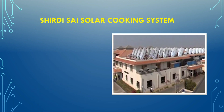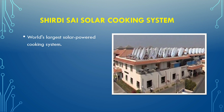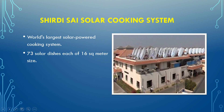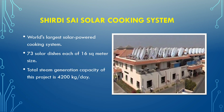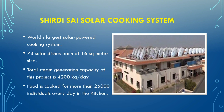The next one is a solar cooking system — the world's largest solar cooking system. It contains 73 solar dishes of 16 square meters each, and it cooks food for about 25,000 individuals per day.